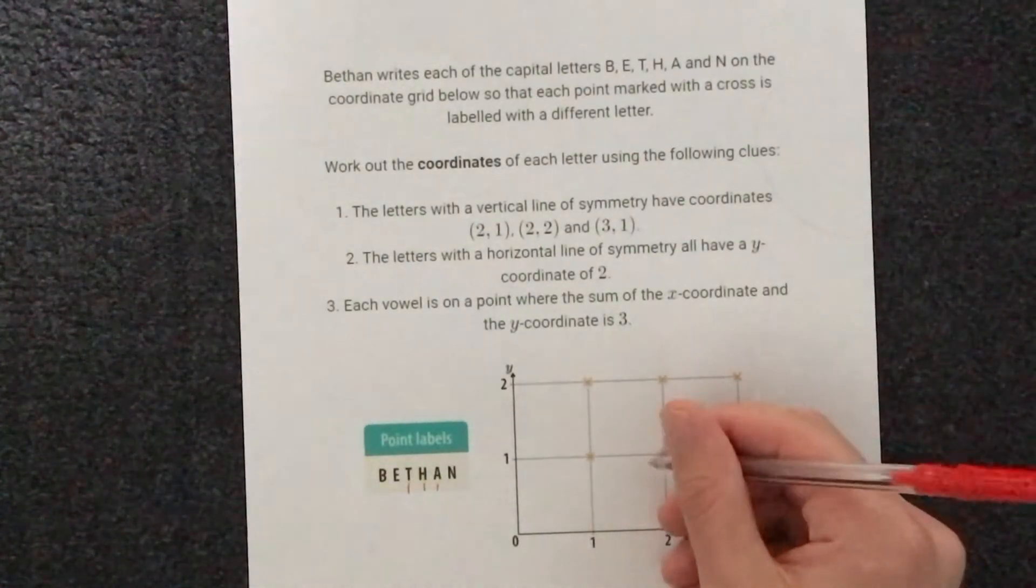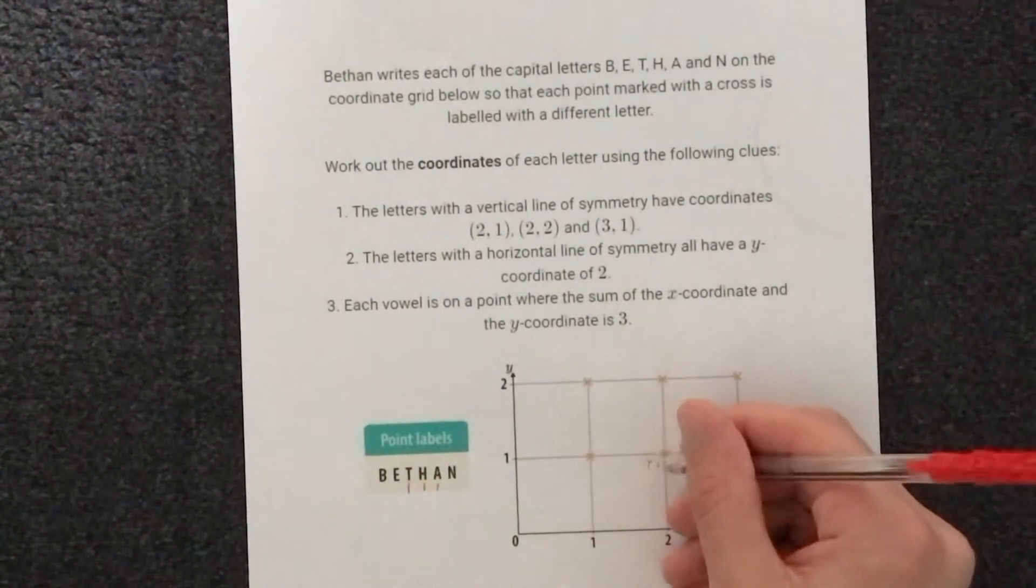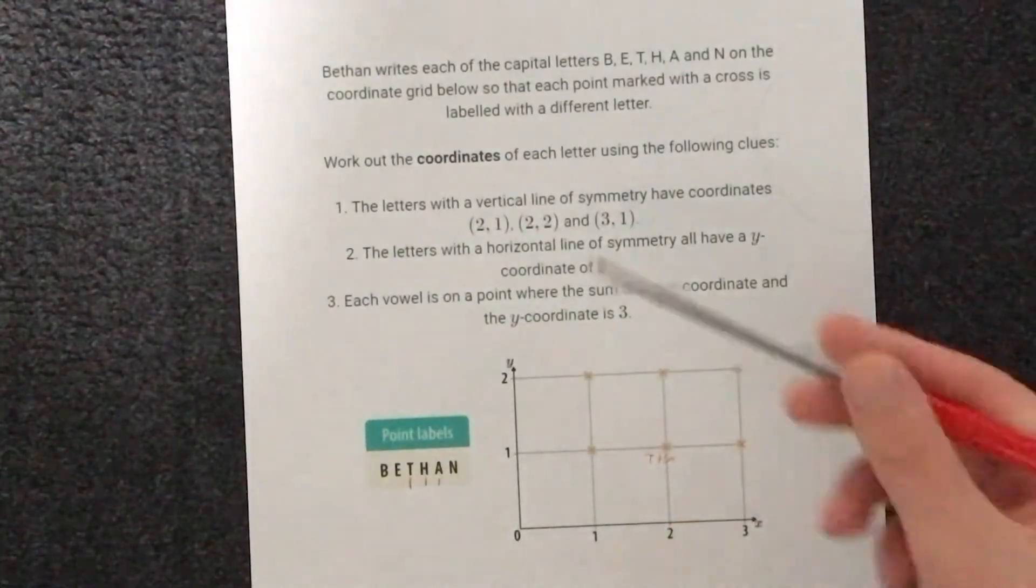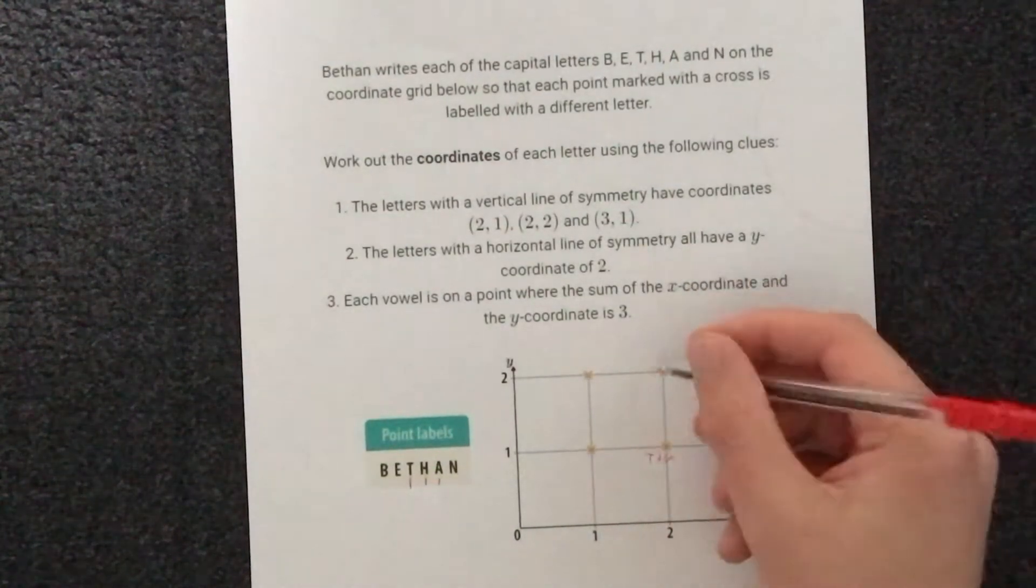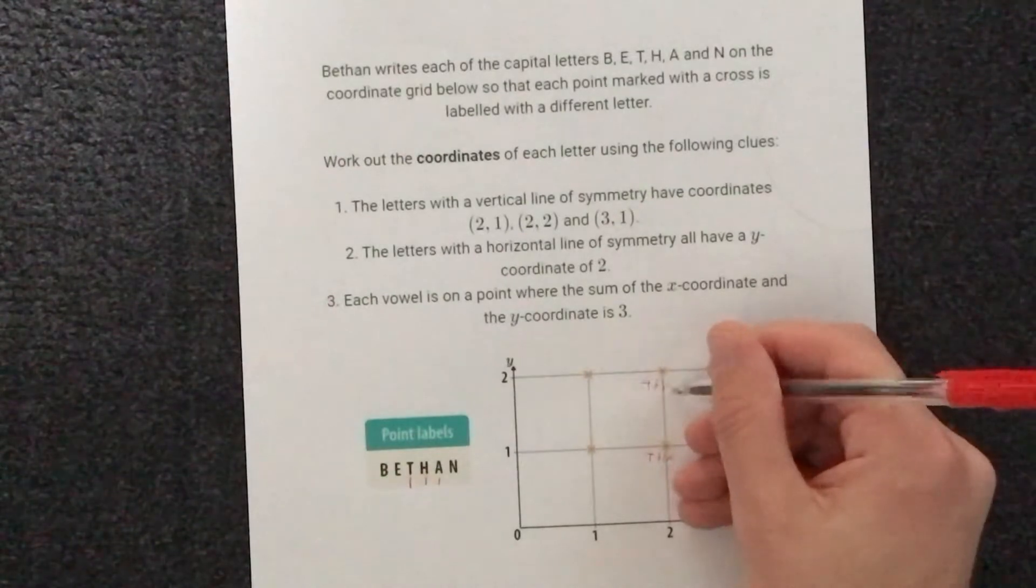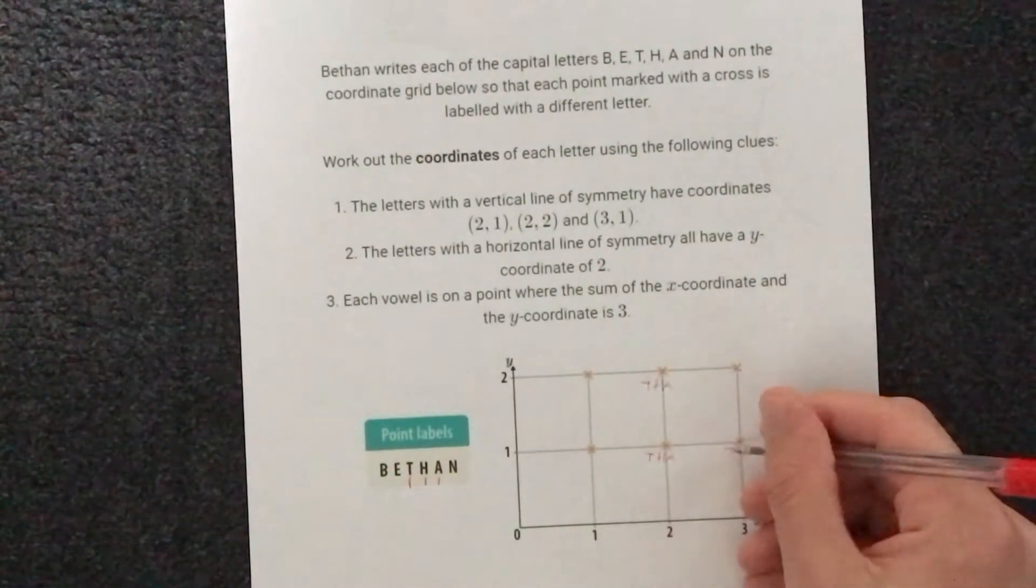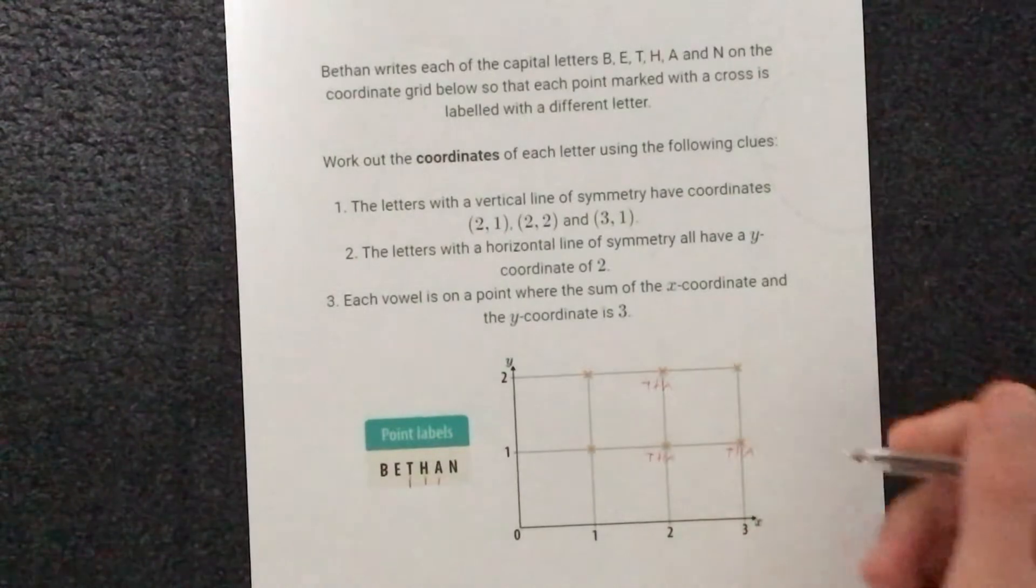So (2,1), that could be T, H or A. (2,2), that could be T, H or A. And (3,1), that could be T, H or A.